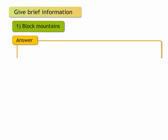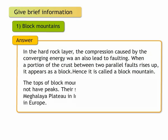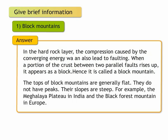Give brief information. 1. Block mountains. In the hard rock layer, the compression caused by the converging energy waves can also lead to faulting. When a portion of the crust between two parallel faults rises up, it appears as a block. The tops of block mountains are generally flat. They do not have peaks. Their slopes are steep. For example, the Meghalaya Plateau in India and the Black Forest Mountain in Europe.